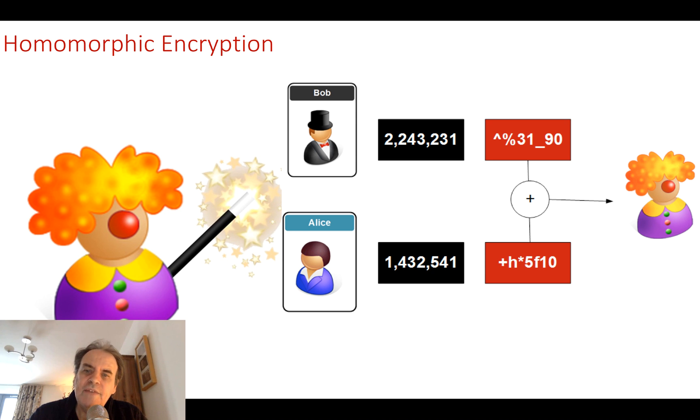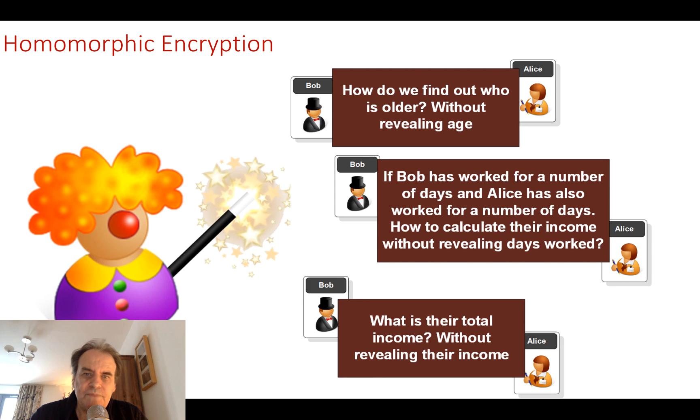They will then use their private key to decrypt the values. In this way, Eve cannot determine what the original values were or even what the result of the calculation was. So it might be that we want to find out who's older, Bob and Alice, without actually revealing their age. We might want to find out if Bob has worked for more days than Alice. And we could calculate the total salary between Bob and Alice without revealing their income.